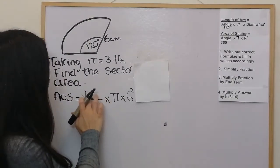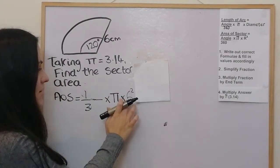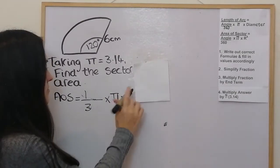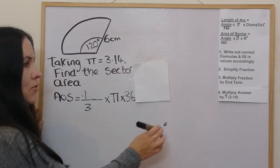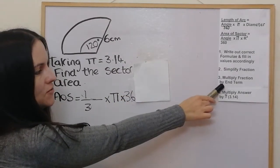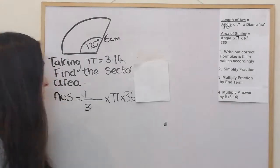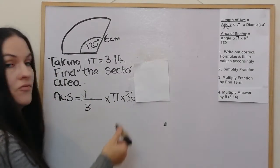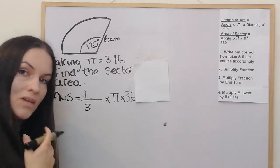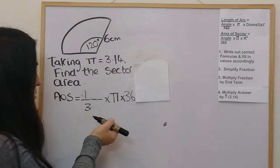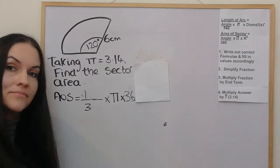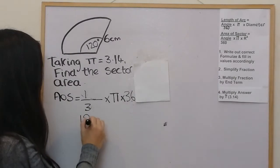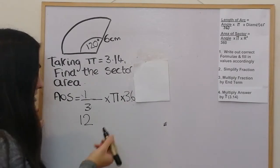So the fraction simplifies to 1 over 3. Then 6 squared is 36. The next step is to multiply the fraction by the end term, so we're multiplying a third by 36 — essentially finding a third of 36. We divide by the bottom and times by the top: 36 divided by 3 is 12, and 12 times 1 is just 12.